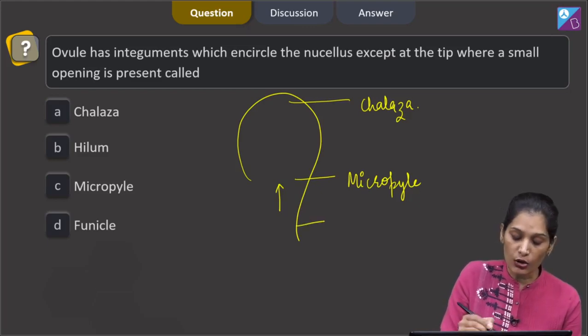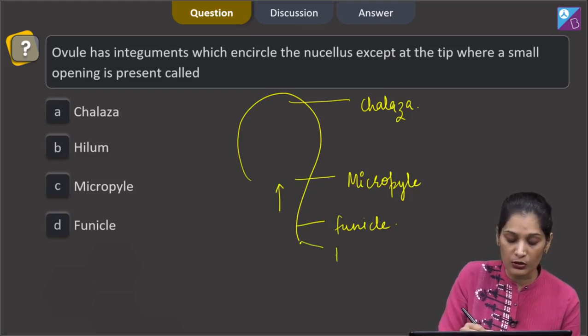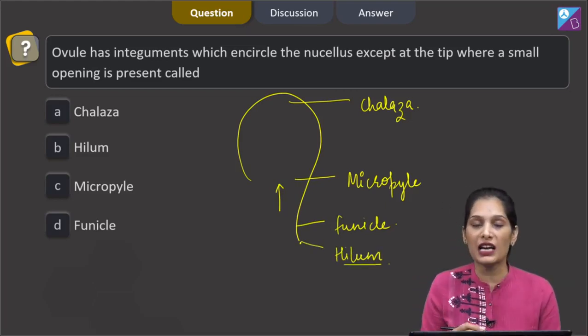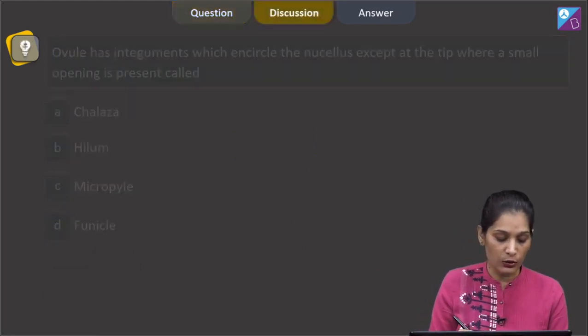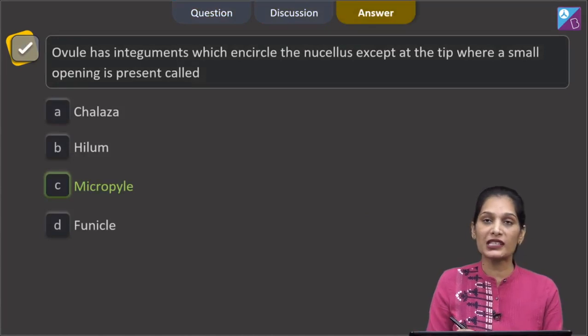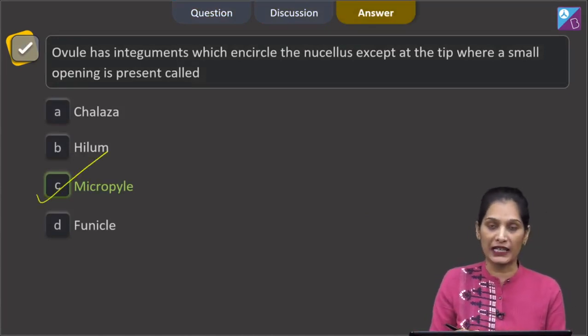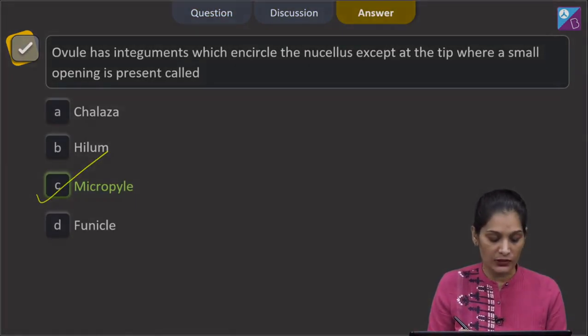And the stalk of the ovule is called funicle, and the point by which the ovule is attached to the ovary is called the hilum, which can be seen as scar on the seed coat. So the correct option for the given question is option c, which is micropyle. Let's move to the next question.